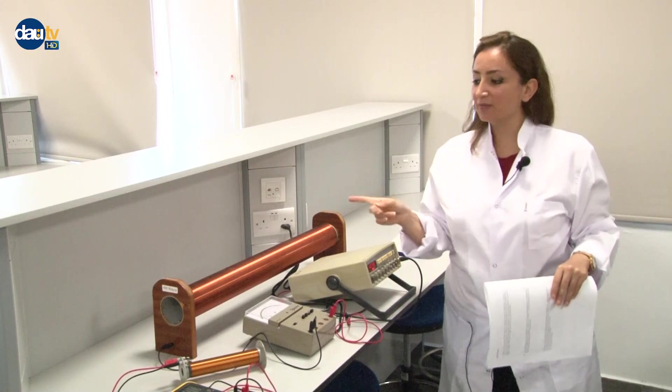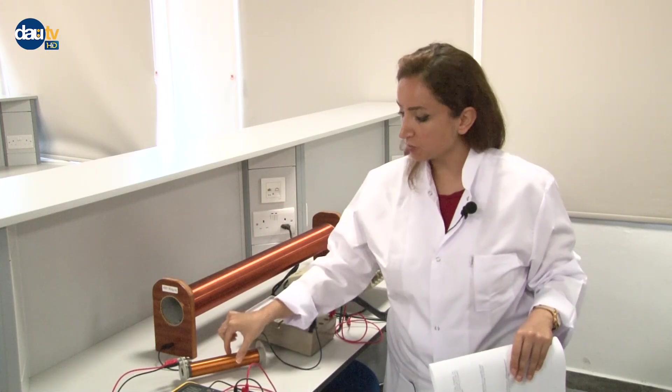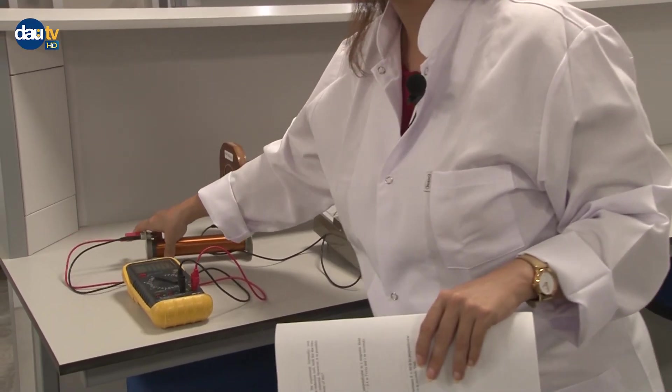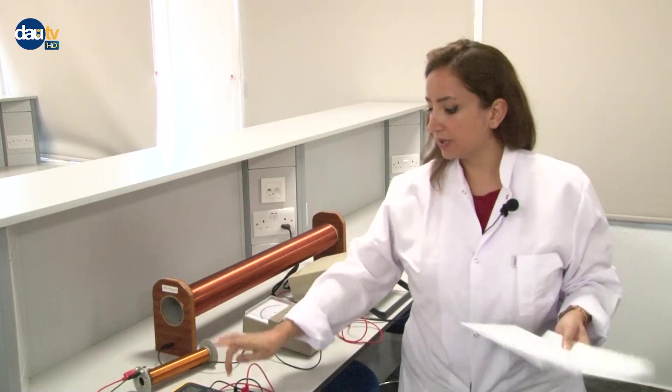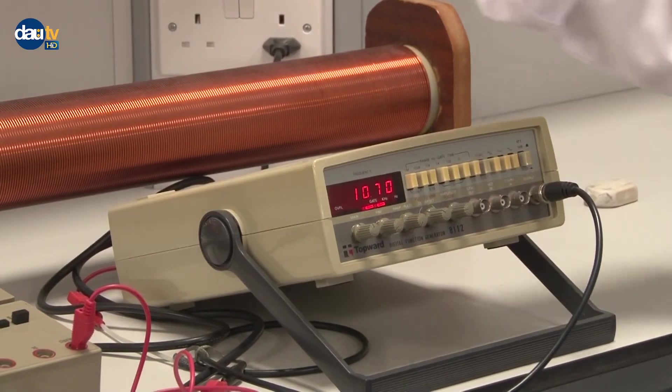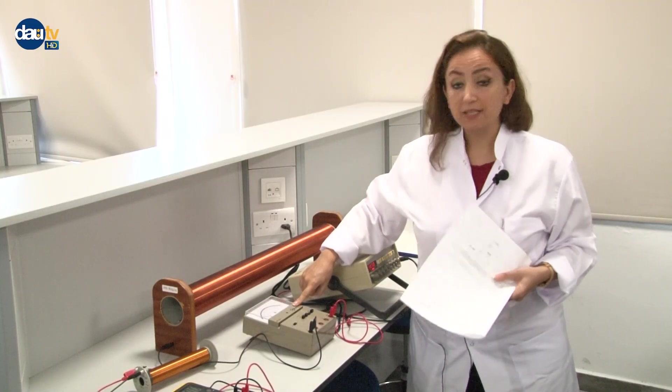As you see here, we have two different solenoids. One of them is a smaller one, which we want to put inside of the bigger one. And we have the voltmeter and the functional generator. With this device, we want to read the current.